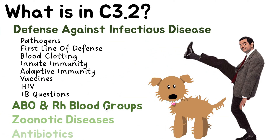In this video we're going to be talking about zoonotic diseases. In C3.2 there's a bunch of topics including defense against infectious disease, ABO and RH blood groups, zoonotic diseases and antibiotics. I've made a video on defense against infectious diseases, which was a huge video, and also a video on ABO and RH blood groups. So now we're doing zoonotic diseases and in the next video we'll be doing antibiotics.